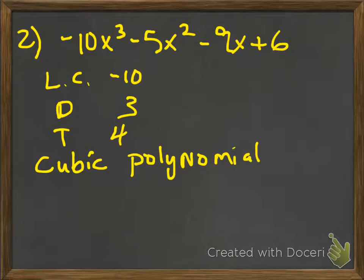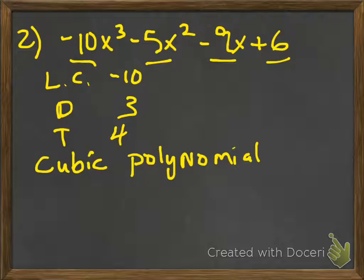Next question, number two. This is it in correct order — highest exponent to lowest: x cubed, x squared, x, no x, or just a number. The first term, no matter what, is the leading coefficient. The degree is the highest exponent. One, two, three, four terms — this would be called a cubic polynomial. Both these questions are found in section 6.1.